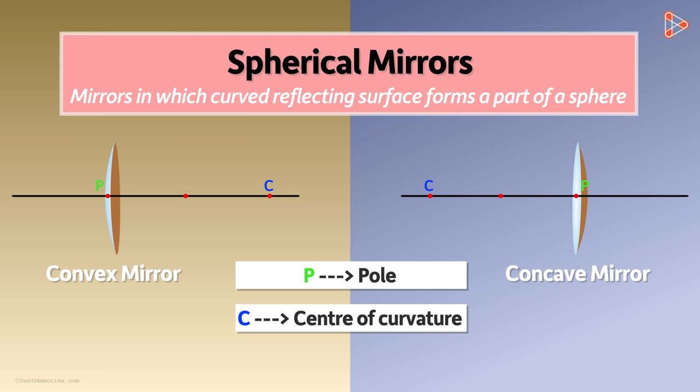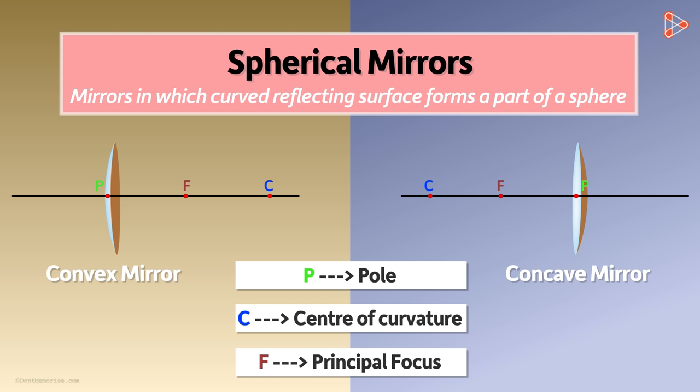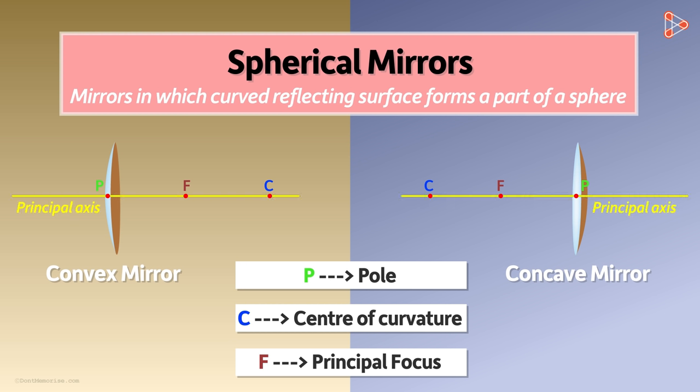The midpoint of CP is called the focal point of the respective mirror. The other name for it is principal focus. It's called so because it lies on the principal axis.